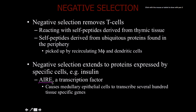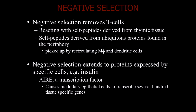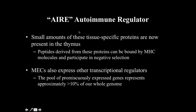There's a transcription factor known as AIRE — the autoimmune regulator. This causes the medullary epithelial cells to transcribe several hundreds of tissue-specific genes. So T cells get exposed to self-antigens from throughout the body. Small amounts of these tissue-specific proteins are present in the thymus, and the peptides derived from these proteins can be bound by MHC molecules and participate in the process of negative selection.